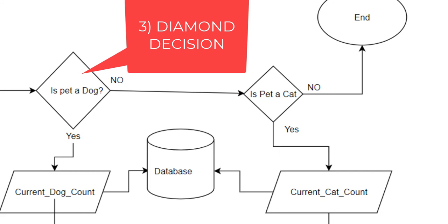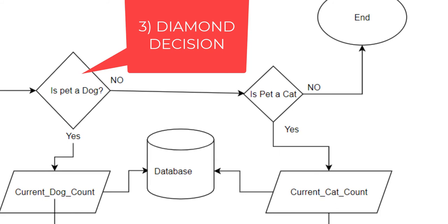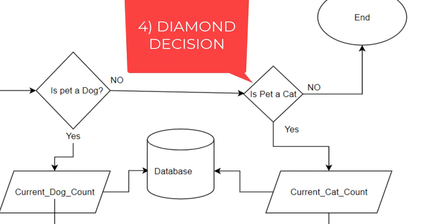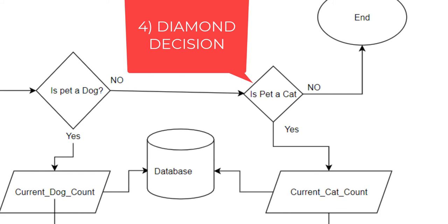So you have to ask, is pet a dog? Yes, you go one way. No, you don't. And then you move to the next step. Is pet a cat? And so on this step, you would say, yes, it is a cat and go down or no, it's not. And if it's not a pet, if it's not a dog, and if it's not a cat, you're going to the end terminal and you're ending this process.